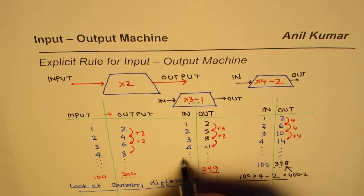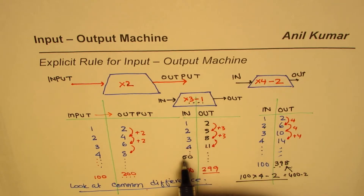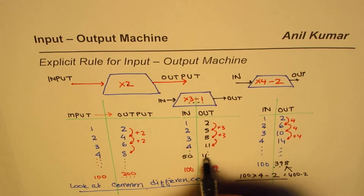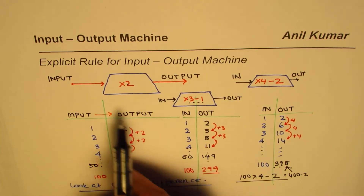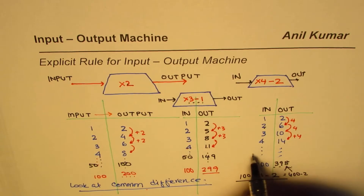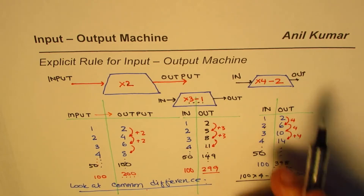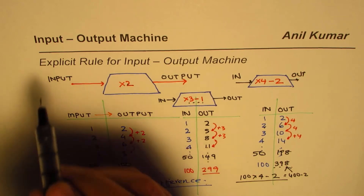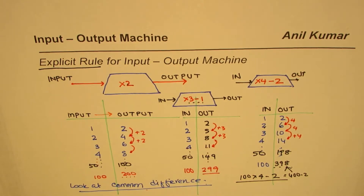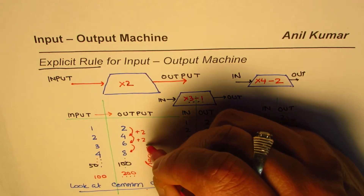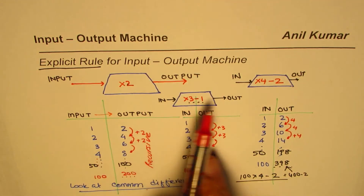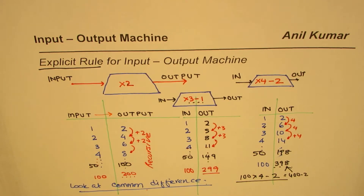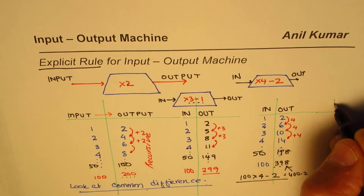If input is 50 in the second example, rule is ×3 − 1: 50 × 3 = 150, minus 1 is 149. For the first example ×2: 50 gives 100. For the third example ×4 − 2: 50 gives 198. This is what we call the explicit rule. The rule 'adding 2 each time' is called recursive, while the direct formula relating input to output is the explicit rule.